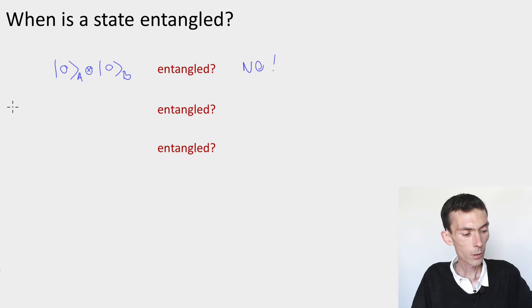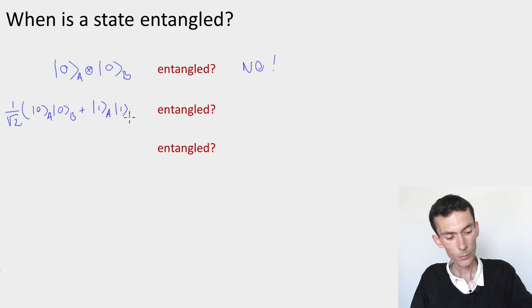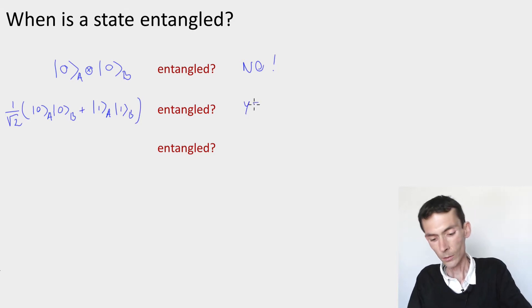Let's take another example. Let's take 1 by root 2 times 0 on A, 0 on B, plus 1 on A, 1 on B. Is this entangled or not? Yes, this is an entangled state. It's the EPR pair.